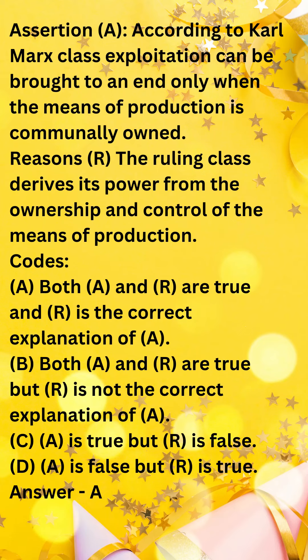Assertion A: According to Karl Marx, class exploitation can be brought to an end only when the means of production is communally owned. Reason R: The ruling class derives its power from the ownership and control of the means of production.